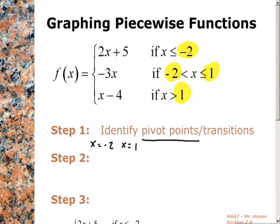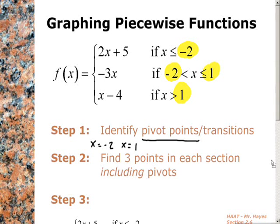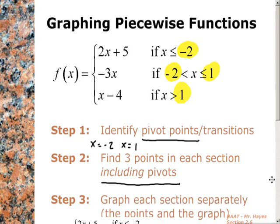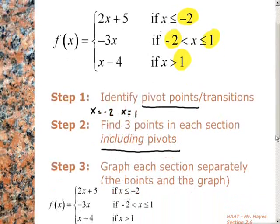Step 2 is that we're going to go through and find three points in each of these different sections to plot. The most important part is including pivots, because you need to be able to see where you're shifting from one graph to another. We only use this function where x is greater than 1, so as soon as we come off of 1 — 1.00005 or whatever — we're on this rule. That's the old open circle, closed circle option.